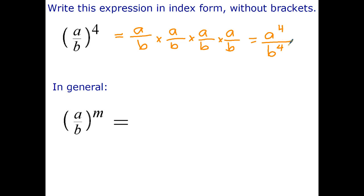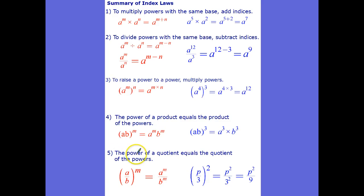What do you think the general rule for this is going to be? Hopefully it's fairly obvious that when I write it without brackets the power gets put on to each of the terms. So the general rule is going to be a to the power of m over b to the power of m. The rule in words is the power of a quotient equals the quotient of the powers.